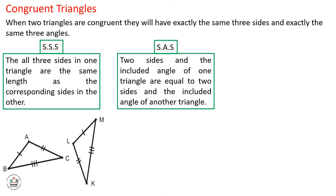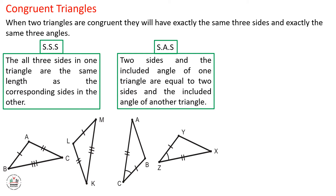Let's move to the second case: Side-Angle-Side. In this case, two sides and the included angle of one triangle are equal to the two sides and the included angle of another triangle. So again we have two equal sides, but this time the included angle between these two sides must be equal also. You have to focus on the word 'included angle'.